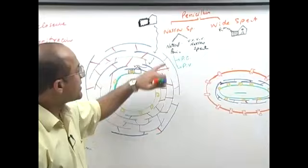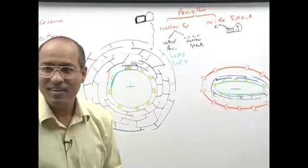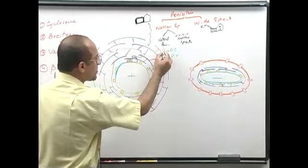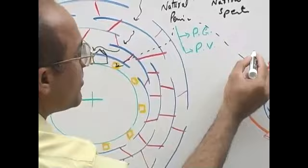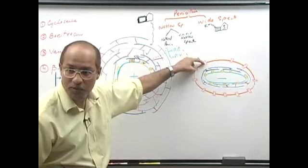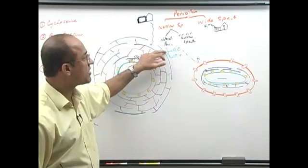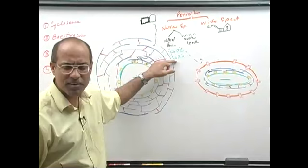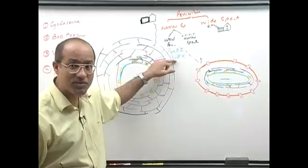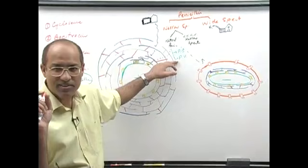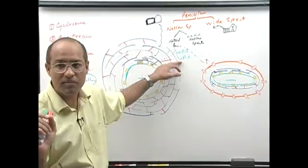If the beta-lactam ring is destroyed, the molecule will fail. Enzymes which destroy this ring are called beta-lactamases because they break down the beta-lactam ring. Integrity of this ring is required for the antibiotic action of beta-lactam antibiotics. Natural penicillin is moderately bulky, so it can easily go to gram positive, but in gram negative it is usually not very successful because it is a larger molecule that cannot enter through porins.